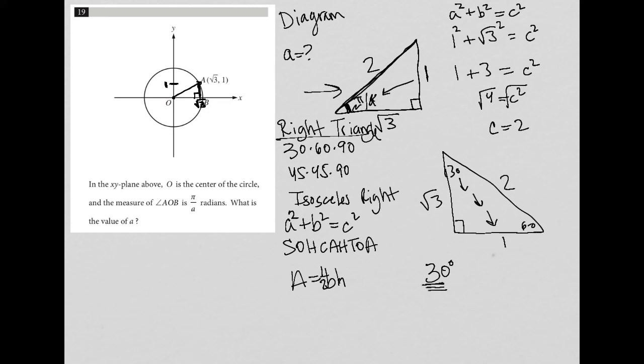But the question wants us to figure out A, and A is the denominator of pi over A, which is in radians, so we're not in degrees. So I need to convert 30 degrees into radians. The way you do that is you multiply your degree measurement, 30 degrees,